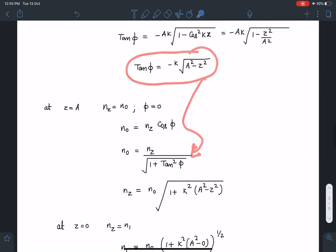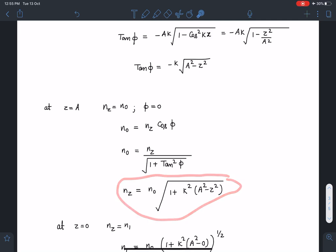When I substitute here and simplify I am directly getting this nz is equal to n0 root of 1 plus k square times a square minus z square. So please remember this k is unknown to us still, otherwise this would have been my answer.